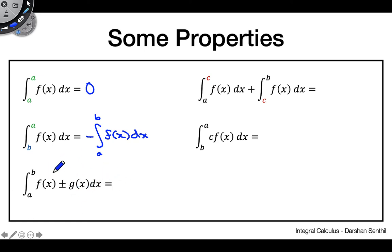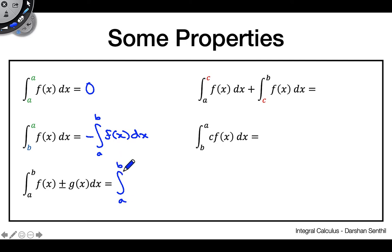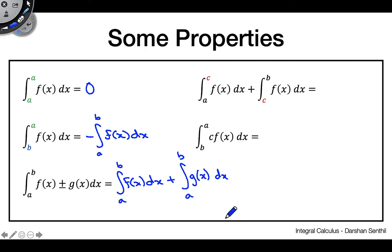The sum/difference property works the same as in derivatives. With integrals, if you see a sum of functions inside an integral, you can split it into two separate integrals. The integral from a to b of [f(x) + g(x)] dx equals the integral from a to b of f(x) dx plus the integral from a to b of g(x) dx.